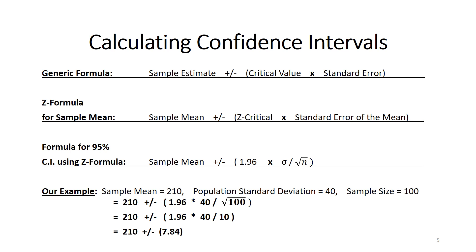Let's personalize this a bit. We are working with a Z test, so we're going to use the Z formula for the sample mean. Our sample estimate becomes the sample mean, and it's plus or minus the Z critical value, multiplied by the standard error of the mean, because our sample estimate was, in fact, a mean.